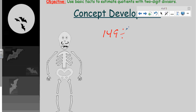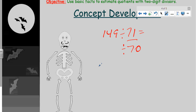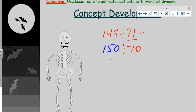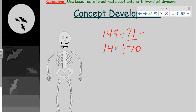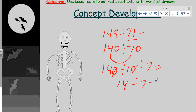Let's take another problem: 149 divided by 71. Again we want to estimate the two-digit divisor — thinking right away, 70 is good. The problem is, looking at the dividend: 150 would be great, but 7 and 15 aren't very compatible. So let's think of another number that's close — 140. If we have 140, look at 7 and 14: those are compatible, and 140 is pretty close to 149. Now I have 140 divided by 70: divide by 10, then by 7, so 14 divided by 7 equals 2.